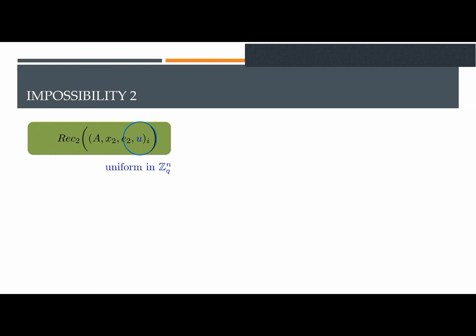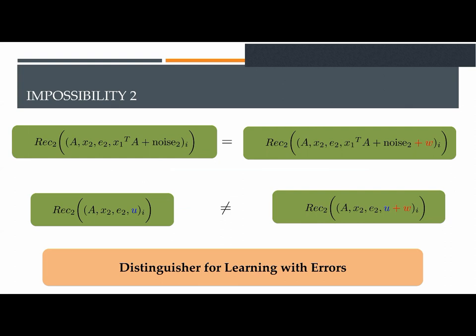On the other hand, if we are trying to evaluate this function REC2, so Bob's reconciliation function on a uniform element instead of an LWE sample, then assuming that it actually depends on the message received by Alice, we can show that adding this small noise changes the output of Bob with noticeable probability. Combining these two facts, we get a distinguisher for Learning with Errors. Namely, if we run REC2 on LWE samples plus some small noise versus if we run on uniform elements plus noise, we can see a difference.